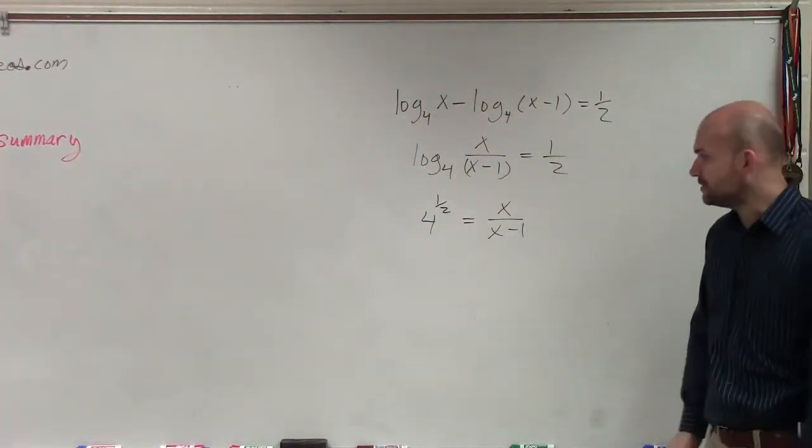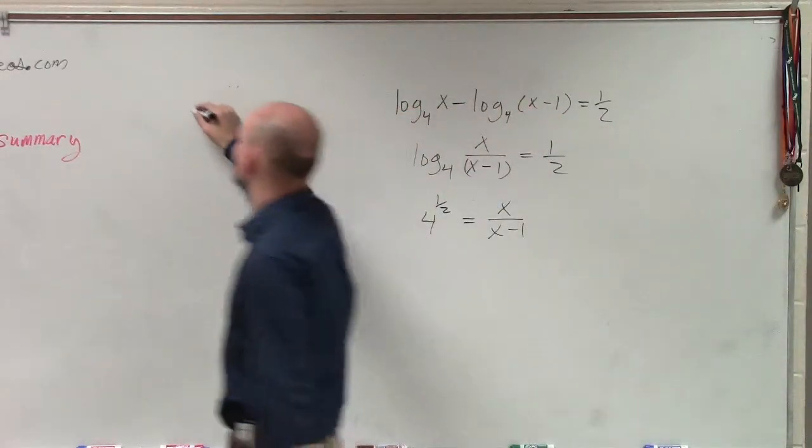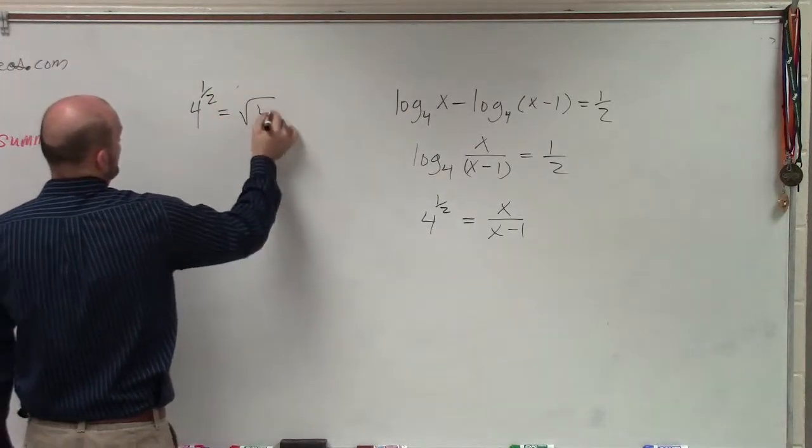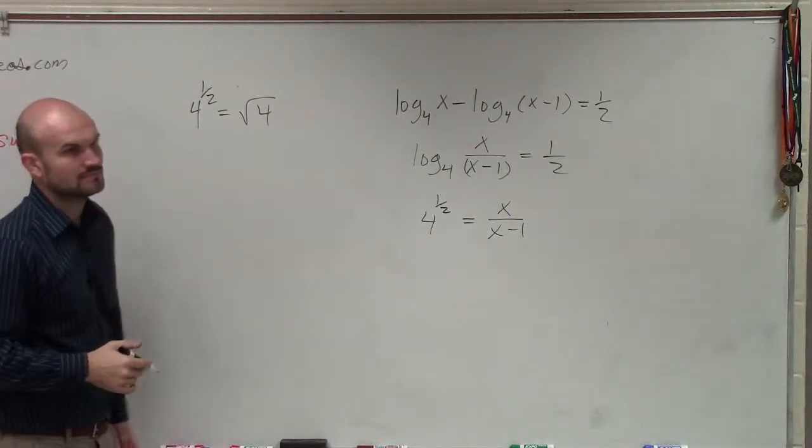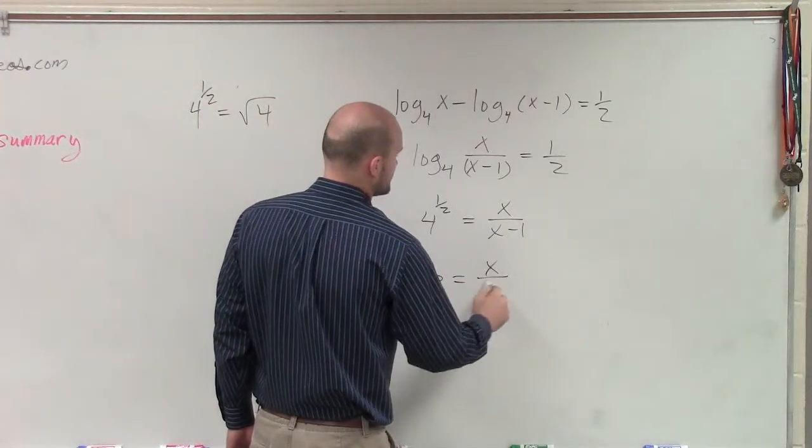So now, ladies and gentlemen, when we take a look at this, well, 4 to the 1/2 power is equal to the square root of 4. So therefore, this answer is 2 equals x over x minus 1.